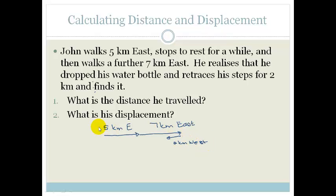So, do you agree that his total east is 5 plus 7, which is 12 kilometers east? But then, he went back 2 kilometers. So, his total displacement, which is actually from here to here, his displacement is 10 kilometers east. Remember, it is a vector, so we have to give it direction.